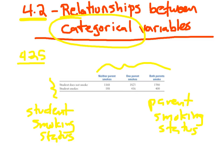The values are not numbers, they are categories. The two values of student smoking status are does not smoke and does smoke. The values for parent smoking status are, the three values, are neither parent smokes, one parent smokes, both parents smoke.